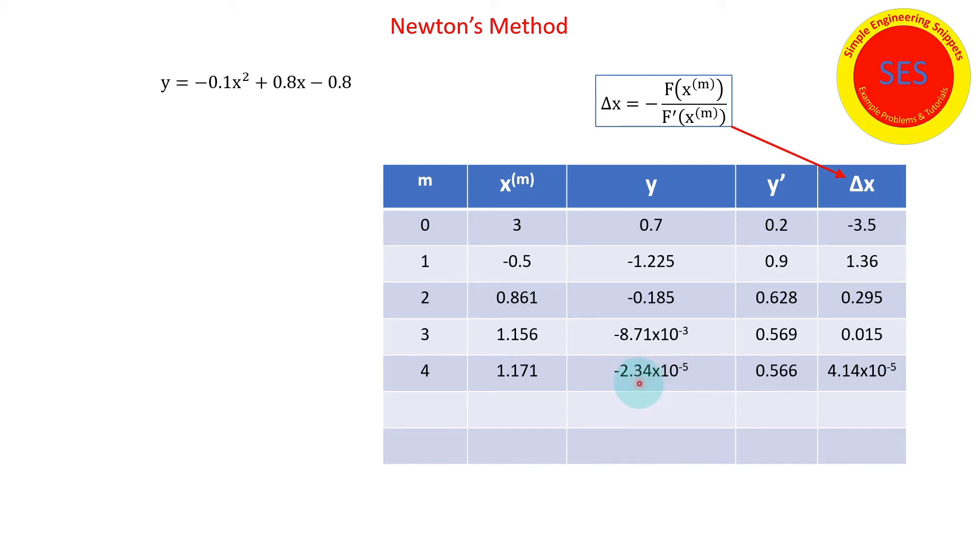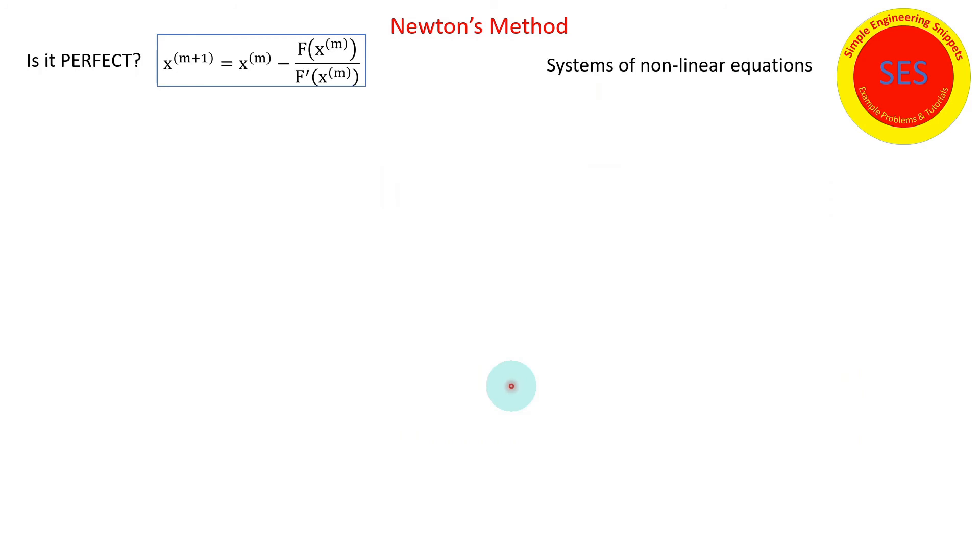And now we see that our function value, absolute value is 2.3 times 10 to the -5. And our delta x is roughly 4 times 10 to the -5. And so likely, there's a good chance that this would satisfy our convergence criteria. And we would stop and our root is 1.17. Okay, so that shows you an example.